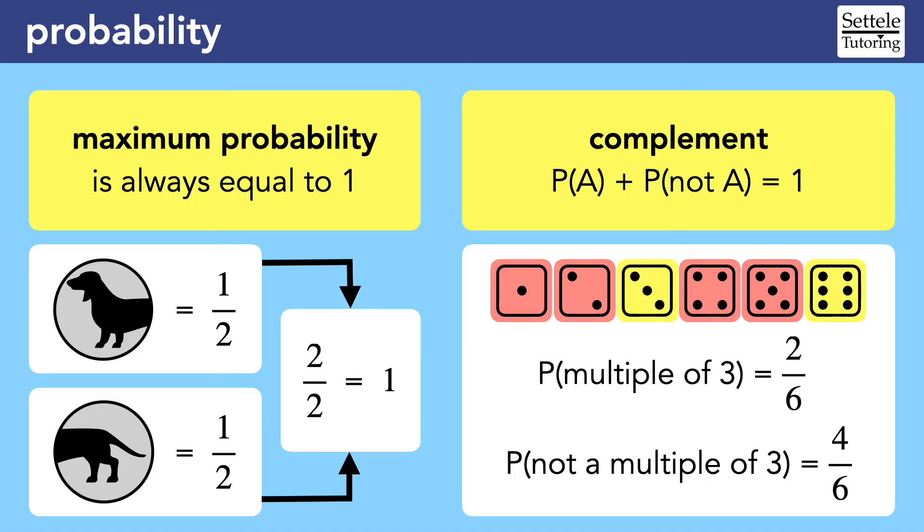But we could have found this by subtracting 2 sixths from 1. Notice that 2 sixths and 4 sixths equals 1 because there are no other outcomes. Every number is either a multiple of 3 or not a multiple of 3. These are mutually exclusive events.